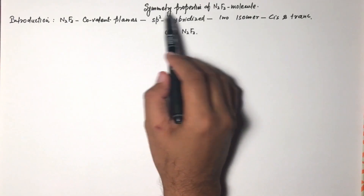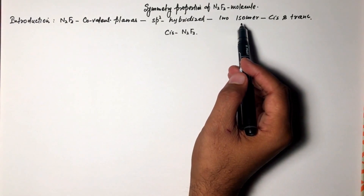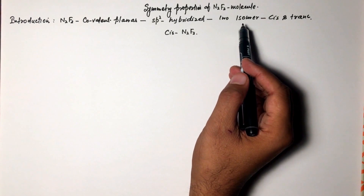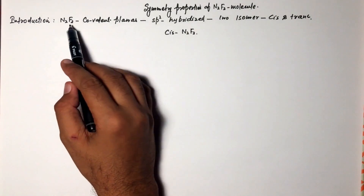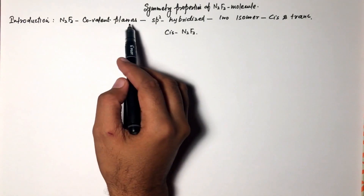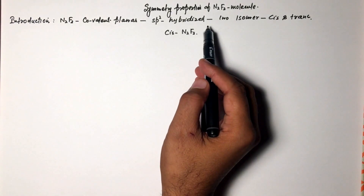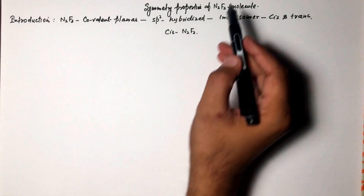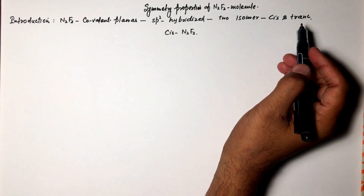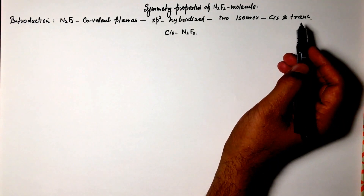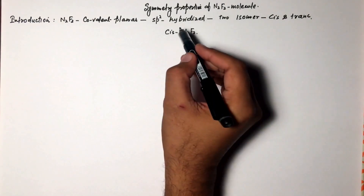Today I am going to explain the symmetry properties of the N2F2 molecule. This N2F2 molecule is a covalent planar molecule and each nitrogen is sp2 hybridized. This molecule has two isomers: first is cis and next one is trans. Today we will try to understand the symmetry properties of the cis N2F2 molecule.